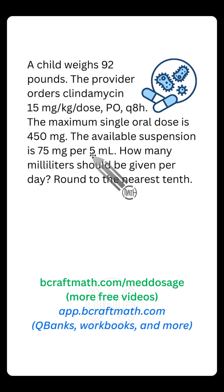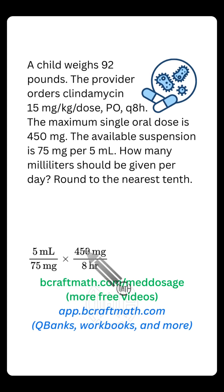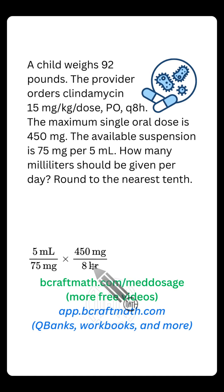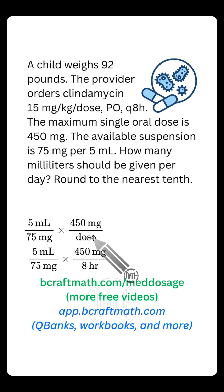So if our goal is milliliters per day, let's start off with these milliliters right here at the top of our first fraction. We have that 5 milliliters contains 75 milligrams of medication. We need to get rid of milligrams, and notice I'm bringing in the 450 milligrams every eight hours — this can also be referred to as 450 milligrams every dose.